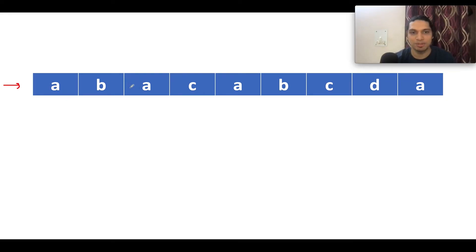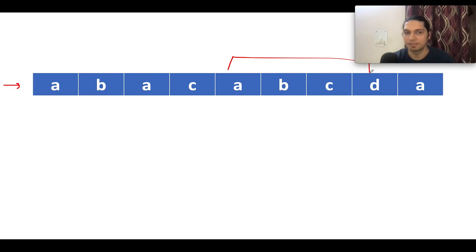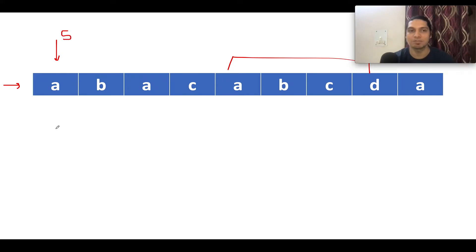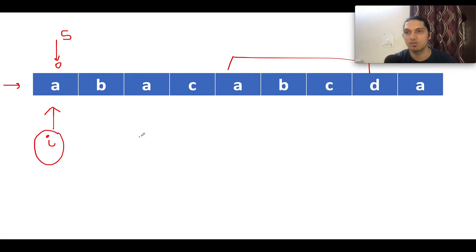We have the string 'abacabcda', and if I ask you what is the length of the longest continuous alphabetical substring, you will say it's 'abcd', which is highlighted here. As I've told you, this problem is based on two pointers, so we'll use that technique. The first pointer is the start pointer and the other is the end pointer — let's call it the i pointer. Let's start the iteration.